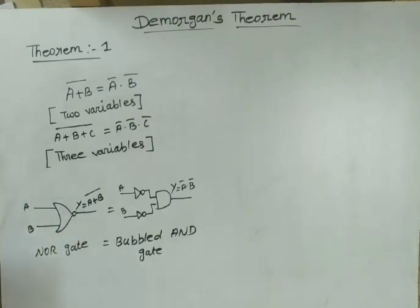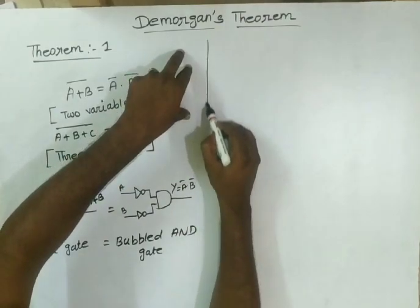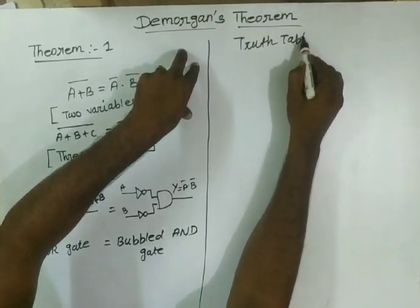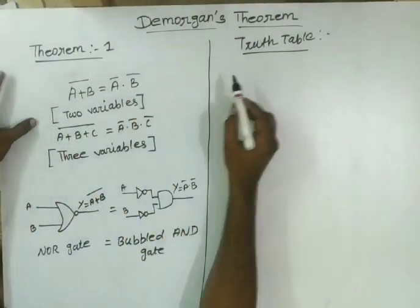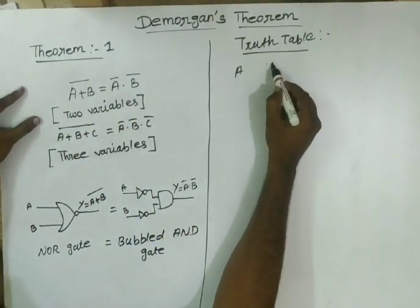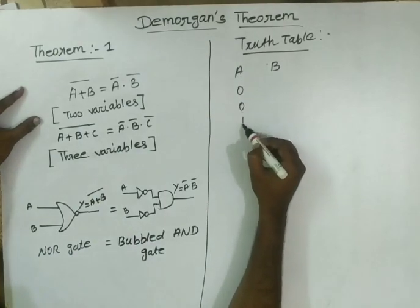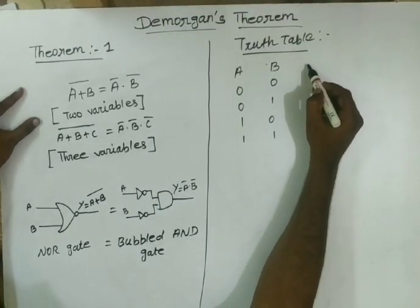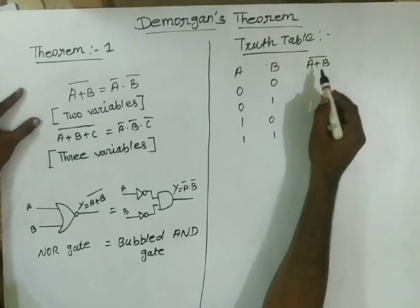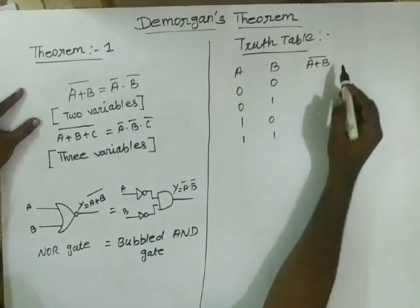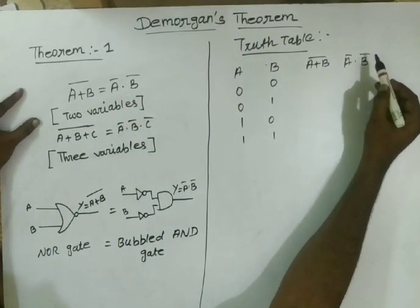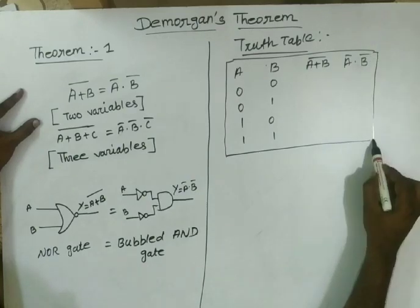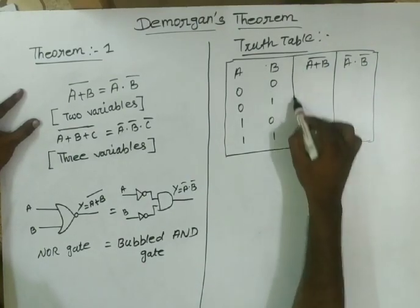Next, verify the truth table. The truth table has two inputs A and B. A is 0, 0, 1, 1 and B is 0, 1, 0, 1. That is called the input. Output: A plus B whole bar — that is the left hand side. Right hand side: A bar dot B bar. This is a two-input, two-output truth table.